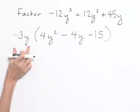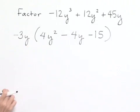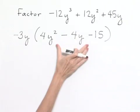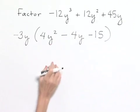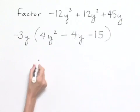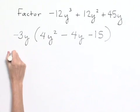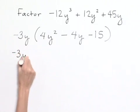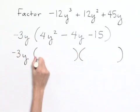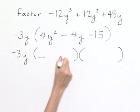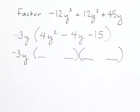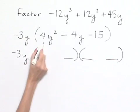This factor, negative 3y, will continue throughout all the next steps. But what we really need to concentrate on right now is factoring the trinomial 4y squared minus 4y minus 15. We're going to need to factor this so we end up with a product of two binomials, and we're trying to decide what values will go into the blanks. We can do so by looking at the various combinations.